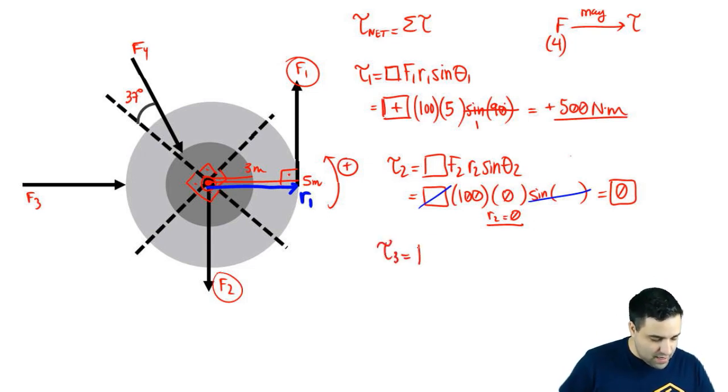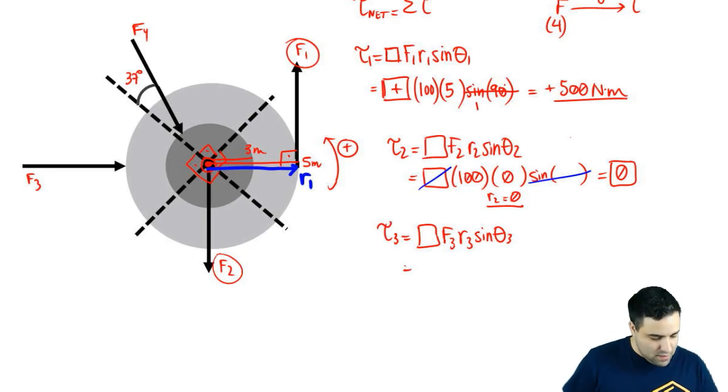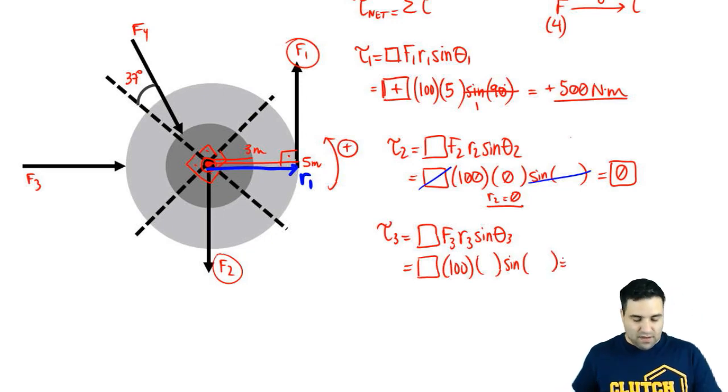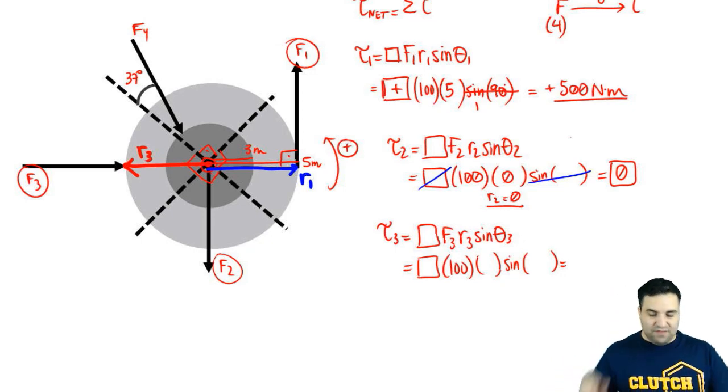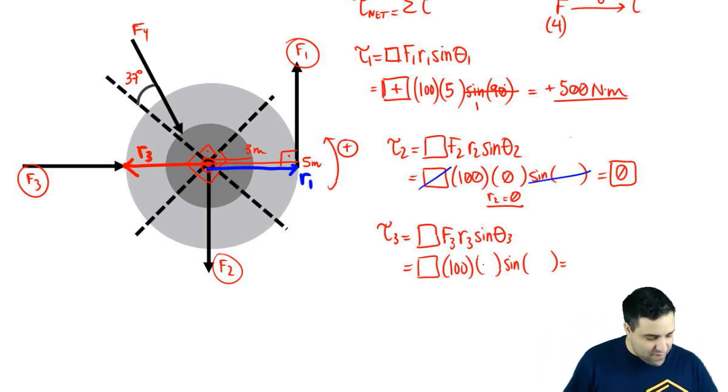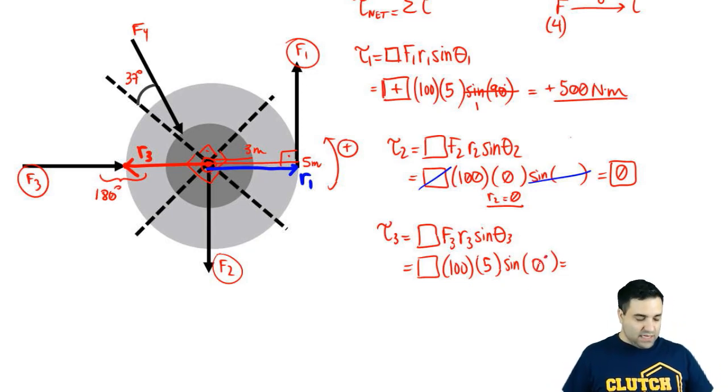For torque three, again, box, space for positive or negative, F3, R3, sine of theta three, and the force is 100. We got to figure out R and theta. If you look at F3, F3 acts on the edge of the outer disc. This is what the R3 vector looks like, right, R3 right here. So R3 vector has a length of the outer radius, which is five, but the problem is these two arrows make an angle of 180 degrees with each other, and the sine of 180 is zero. Okay? Sine of 180 is zero.